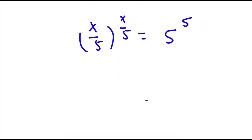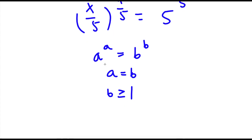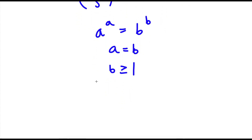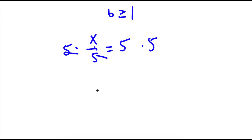Now if I have something in the form a to the power of a is equal to b to the power of b, this means a equals b as long as b is greater than or equal to 1. In this case b is 5, which is greater than or equal to 1. So a, which is x over 5, equals b, which is 5. So x over 5 equals 5, and multiplying both sides by 5 gives x equals 25.